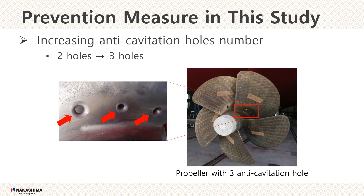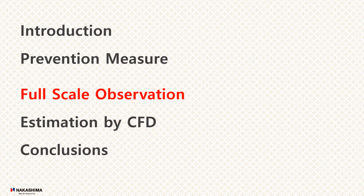This time, in response to the ship owner's request for improvement of the root erosion condition, we propose a change in the number of anti-cavitation holes as a countermeasure — changing the number from 2 to 3. Since erosion frequently occurs between the two anti-cavitation holes that are usually installed, it was expected that drilling an additional hole could be effective. Using this modified propeller, we verify the effect of preventing root erosion by full-scale observation.